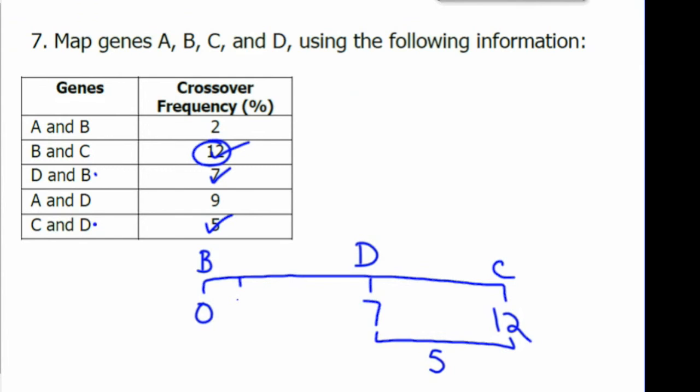So D is at number 7. And then let's look at A. A says it's 2 away from B. So if we put it here, is that also 9 away from D? Is 2 plus 9 7? No, it isn't.